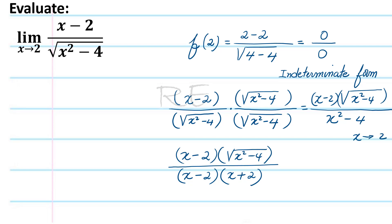Now x is approaching 2 but x is not quite 2. So x is different from 2. We can cross out x minus 2 over x minus 2.